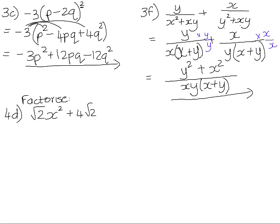Question 4. We have to factorize root 2X squared plus 4 root 2. If we have a look here, we have two terms in this expression, and the common factor to both terms is square root of 2. So we can take square root of 2 out as a common factor, and that will leave us with X squared plus 4.